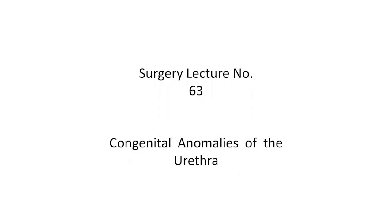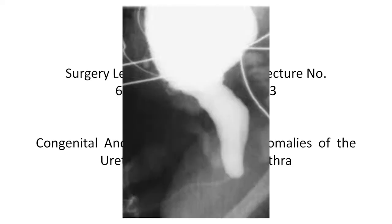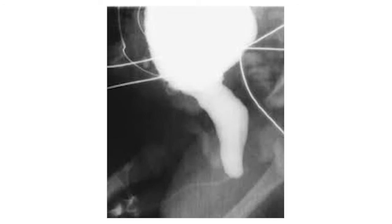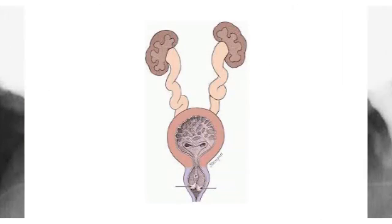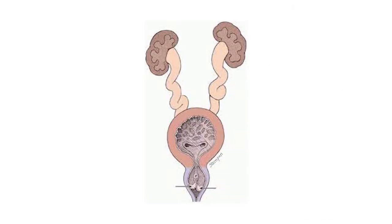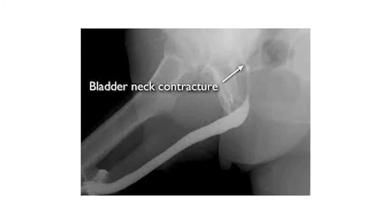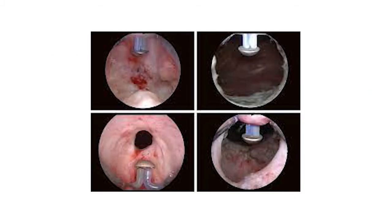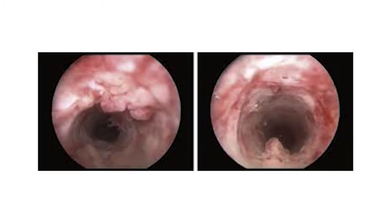Welcome, dear students, to surgery lecture number 63: Congenital Anomalies of the Urethra. In this lecture we will cover congenital urethral stricture, congenital valves of the posterior urethra, congenital obstruction of the neck of the bladder (Marion's disease), contracture of the bladder neck, neoplasms of the urethra, and carcinoma of the urethra.